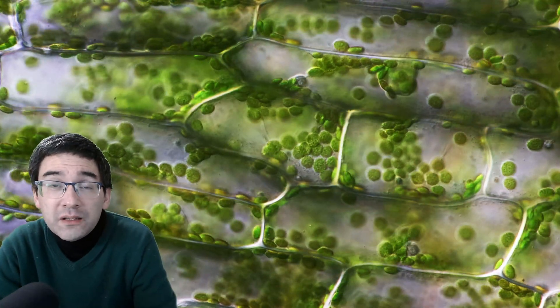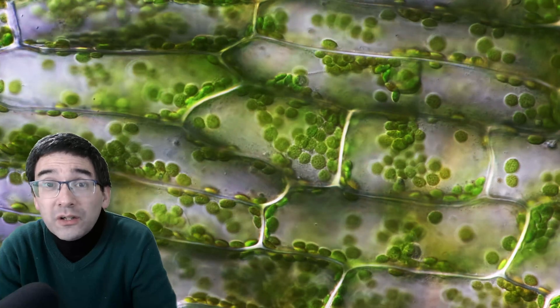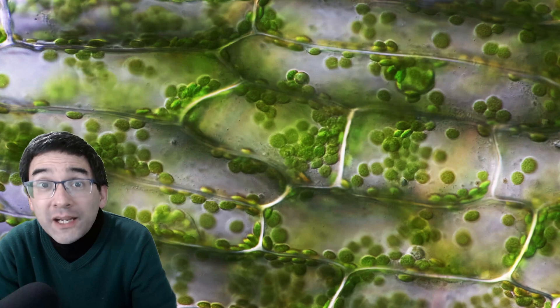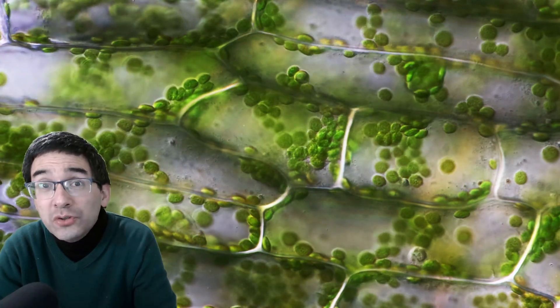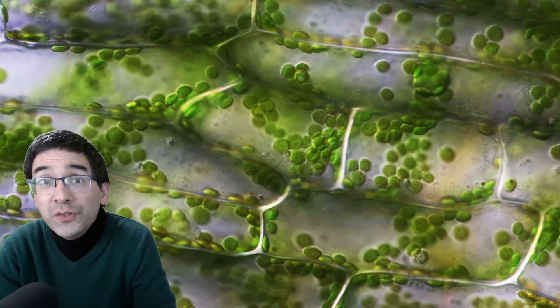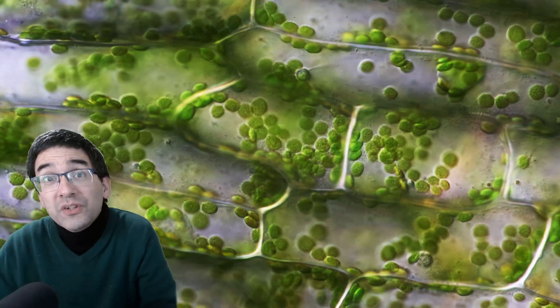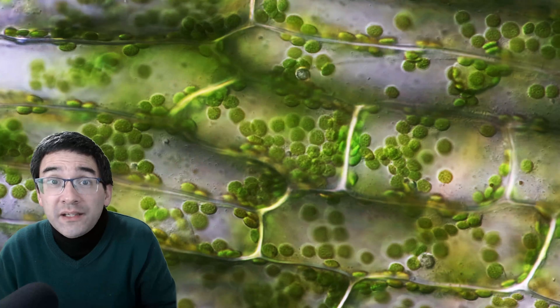After all, green is one of the strongest colors the sun produces. So why do plants reject that? Why do plants not use green for photosynthesis? We know they don't because the chloroplasts are green, sending out the green light again.